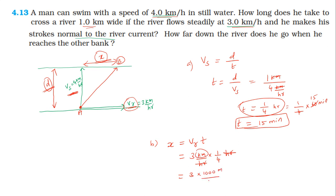The river drags the swimmer: 3 km/h multiplied by 1/4 hour. The hours cancel, and 3 multiplied by 1/4 gives 0.75 km, which equals 750 meters. So the distance dragged by the river is 750 meters.